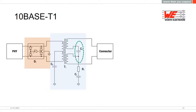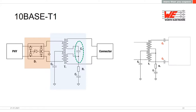Regarding C3: some transformers don't have a splittable center pin. An alternative is to use two capacitors of equal value, one on each lane, placed symmetrically. The performance is essentially the same.